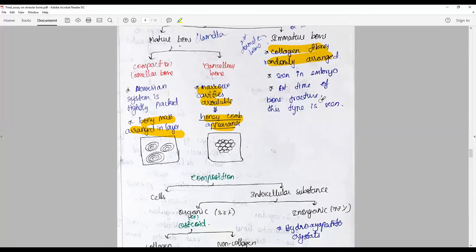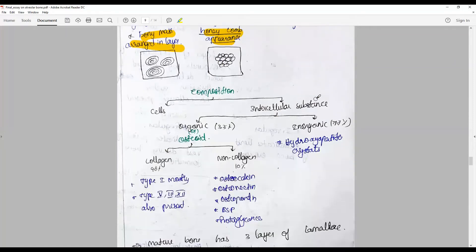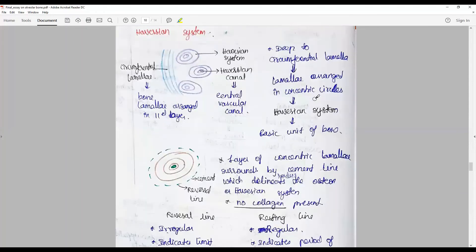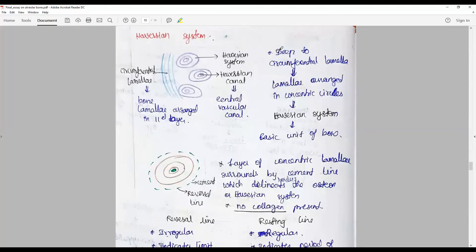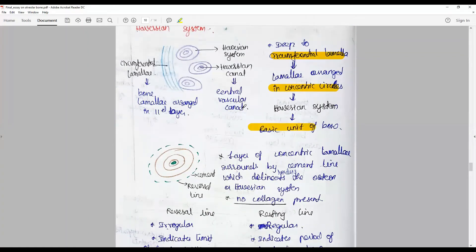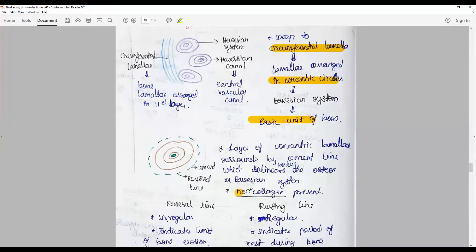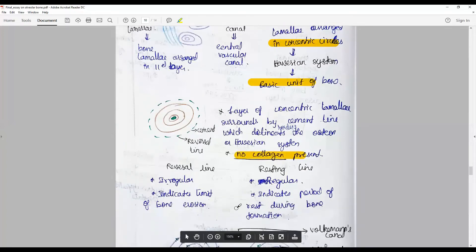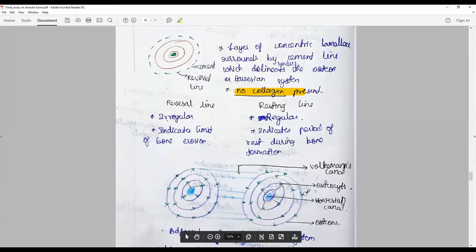And not seen usually in adult stage. Again, the composition going into the Haversian system: a brief recapitulation of how the circumferential lamellas are arranged in concentric circles forming a central osteon, the basic unit of bone with no collagen is present. A brief about resting line and reversal line, the Volkmann canals, how they separate or supply to each of the bone.